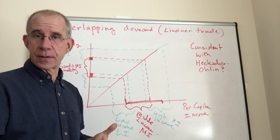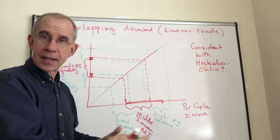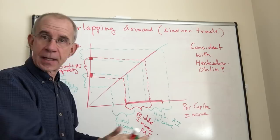The Linder trade and overlapping demand provides some insights. It's not the only answer, but gives a flavor of some of the reasons why similar countries might trade with each other. So it's one of the toolkits for explaining why countries might decide to trade.